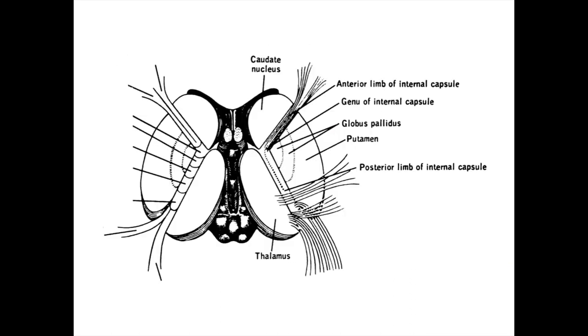The v-shape makes the internal capsule easy to split into three sections: the anterior limb, the posterior limb, and the genu making up the bend between them.